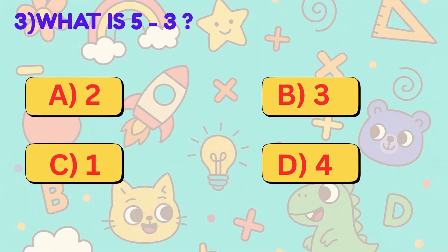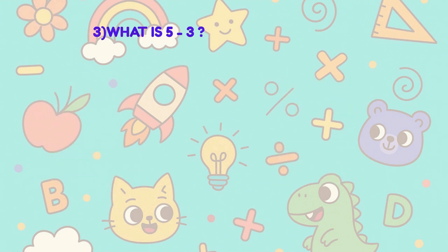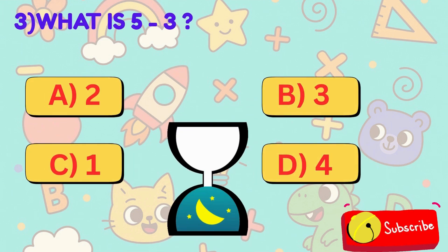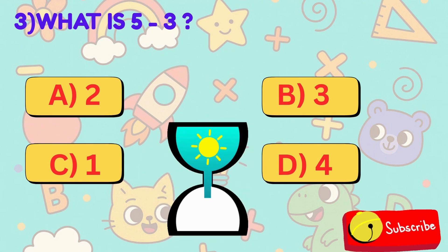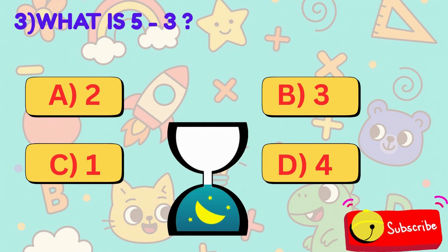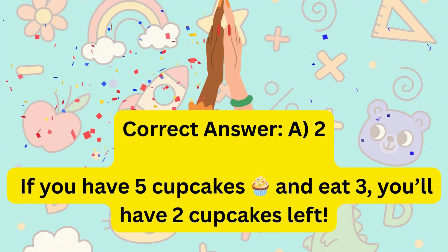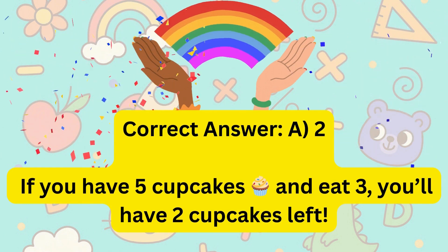3. What is 5 minus 3? Is it A, 2, B, 3, C, 1, or D, 4? Correct answer is A, 2.